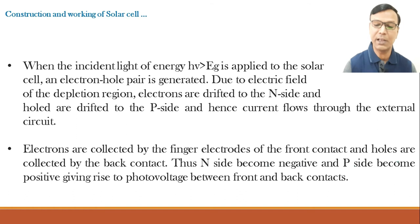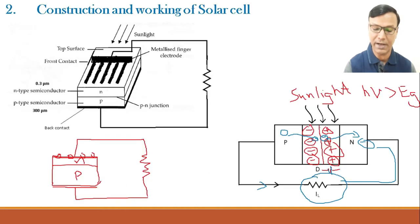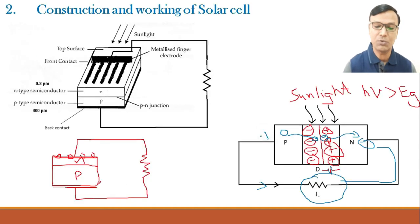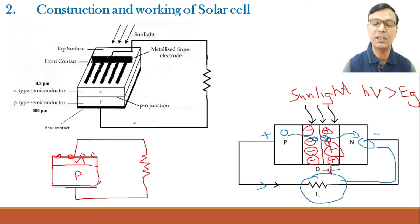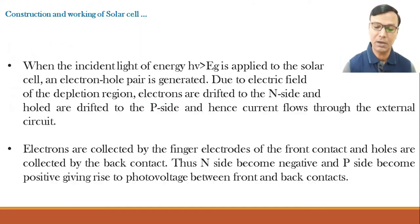Thus, the n-side becomes negative and the p-side becomes positive, giving rise to a photo voltage between the front and back contacts. There is positive charge on one side and negative charge on the other, and a photo voltage is generated between the front and the back contact.